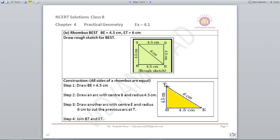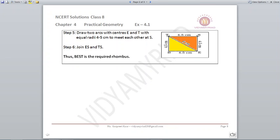Okay, half of this is made, again we need 4.5 cm from T and E. Cut the arc and wherever they cut we will name it as S and then join all the lines BE, ES, ST, TB, TE. All that form is BEST as a required rhombus.